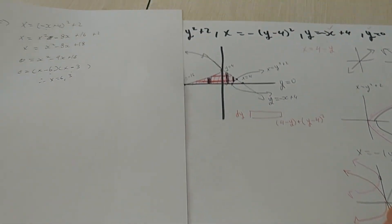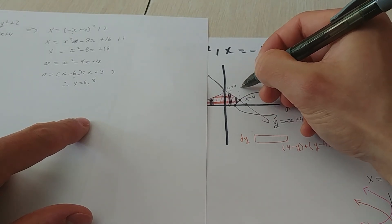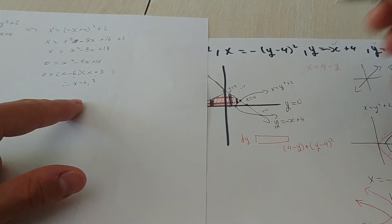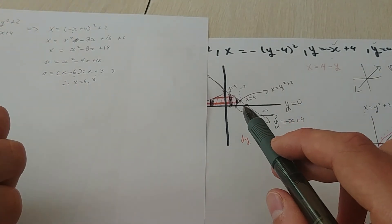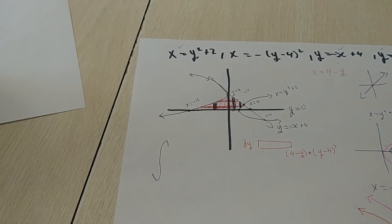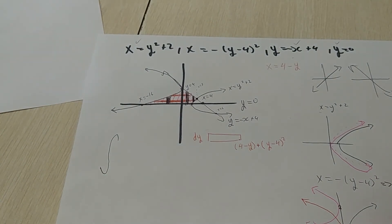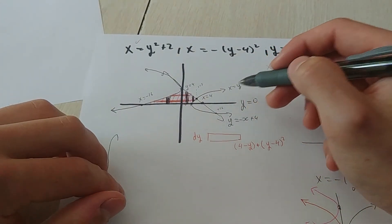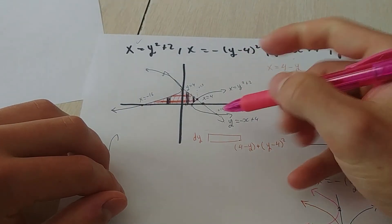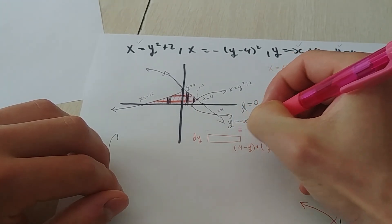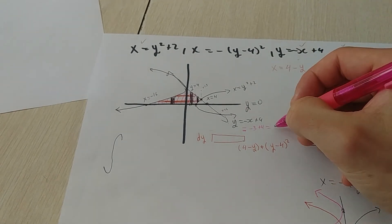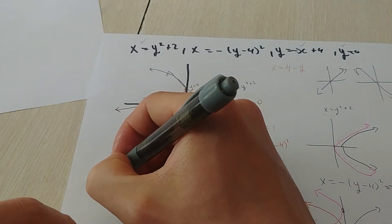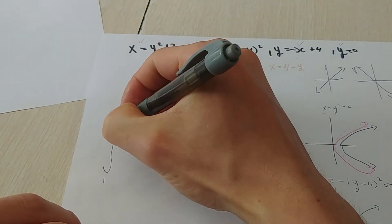Looking back at the diagram, x equals 3 corresponds to the lower intersection and x equals 6 to the upper. We need the y-values though. When x equals 3 in the line function y equals negative x plus 4, we get y equals 1. So the top rectangle integral goes from y equals 1 to y equals 4.